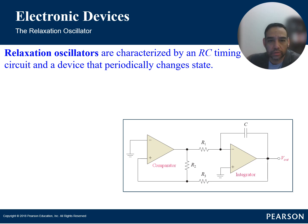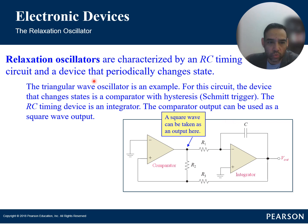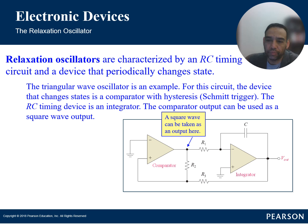The triangle wave oscillator is a key example. The device that changes states is a comparator with hysteresis — also called a Schmitt trigger. The RC timing device is an integrator, and the comparator output can be used as a square wave output. Relaxation oscillators involve periodic charging and discharging of a storage element, and this non-linear process leads to the generation of these specific oscillation types.